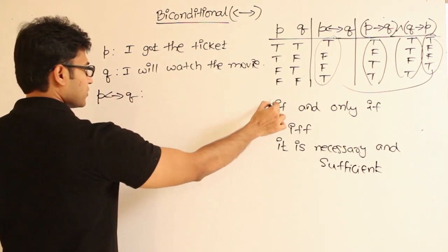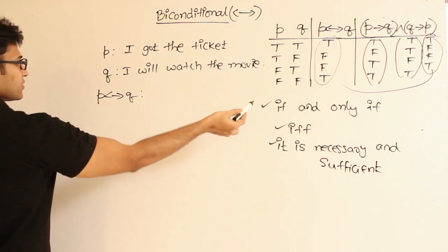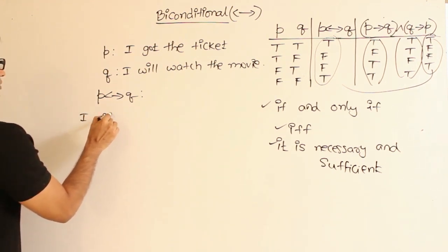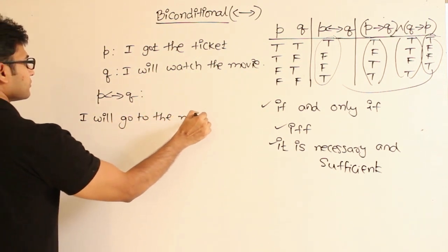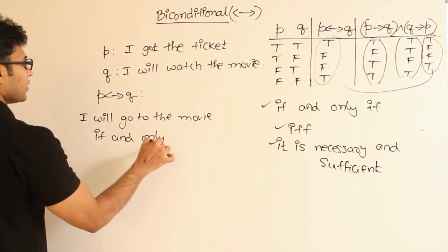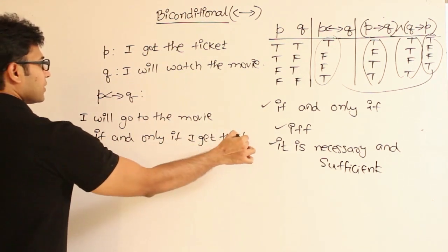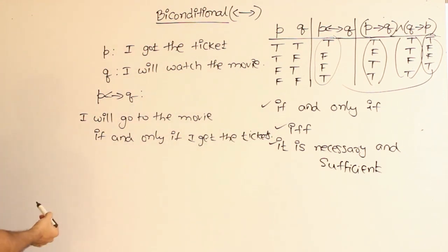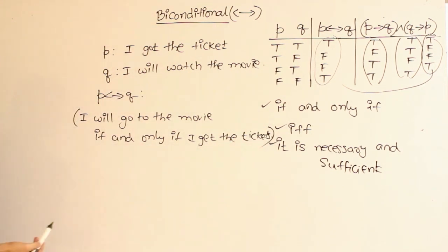Now if you want to write like this P biconditional Q, so how are you going to write it is either you can use 'if and only if', or 'iff', or 'it is necessary and sufficient'. So I am using this 'if and only if' type. So I will go to the movie if and only if I get the tickets.